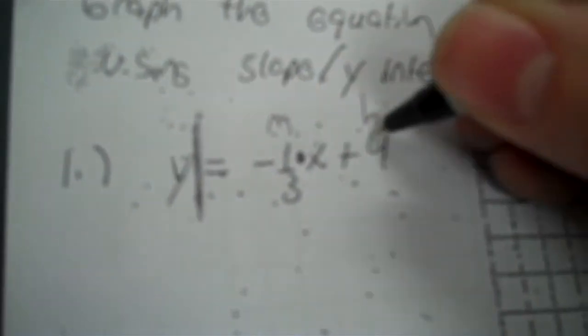Okay, test review. Graph the equation using slope y-intercept. So what you do is you draw a line on your y and then over here you put a times dot on your x.